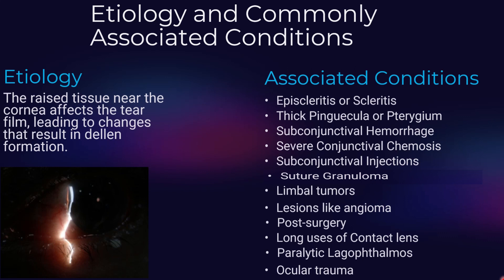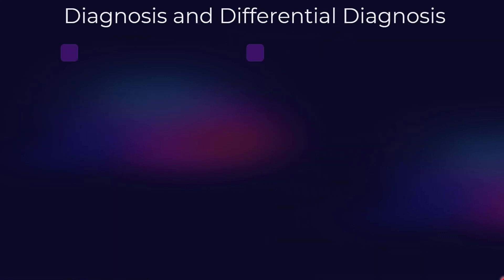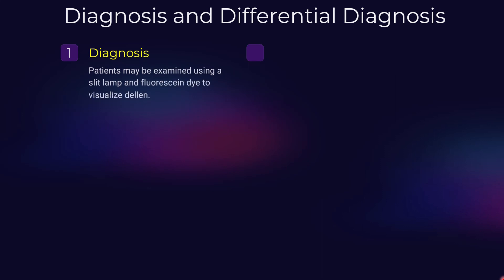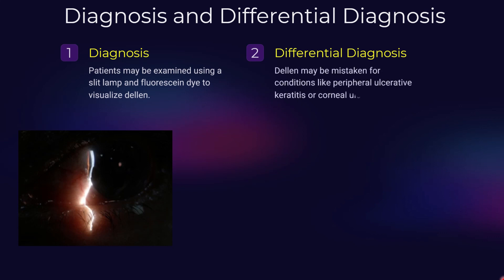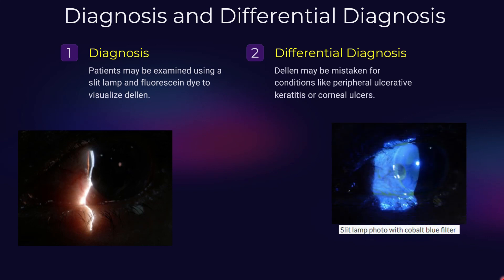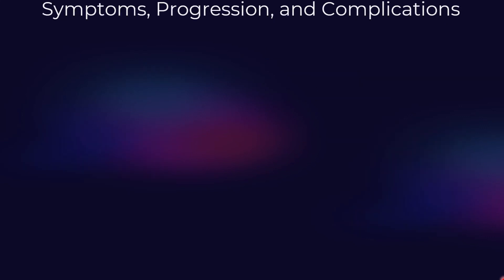For diagnosis, if there is any history like eye surgery or a patient notices changes in their eye appearance, slit lamp examination may help to diagnose corneal dellen. You can notice the thinning of the cornea and steep or sloping walls around the dellen. Eye care professionals may use fluorescein dye to help visualize it. Corneal dellen may be mistaken for other eye conditions like peripheral ulcerative keratitis, corneal ulcers, or Terrien's marginal degeneration.